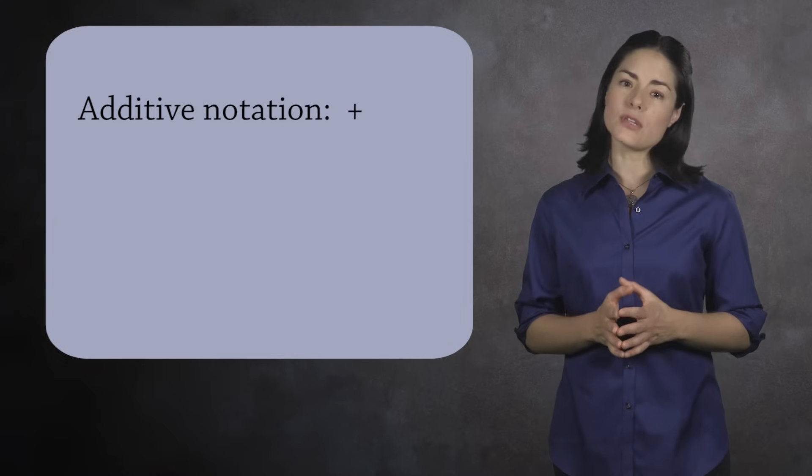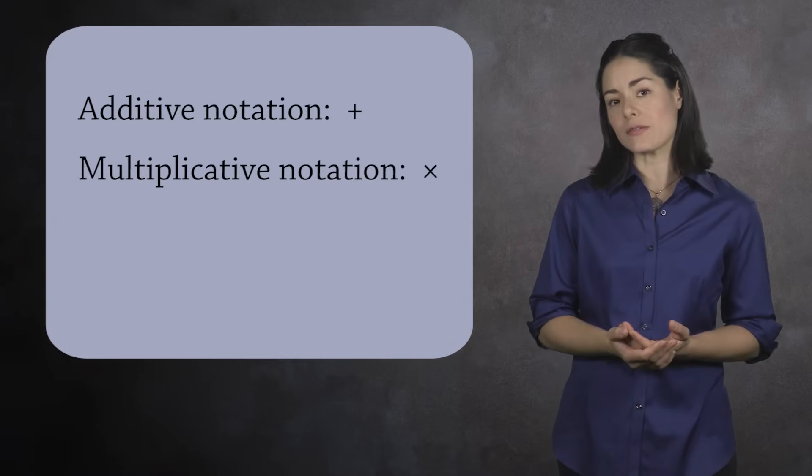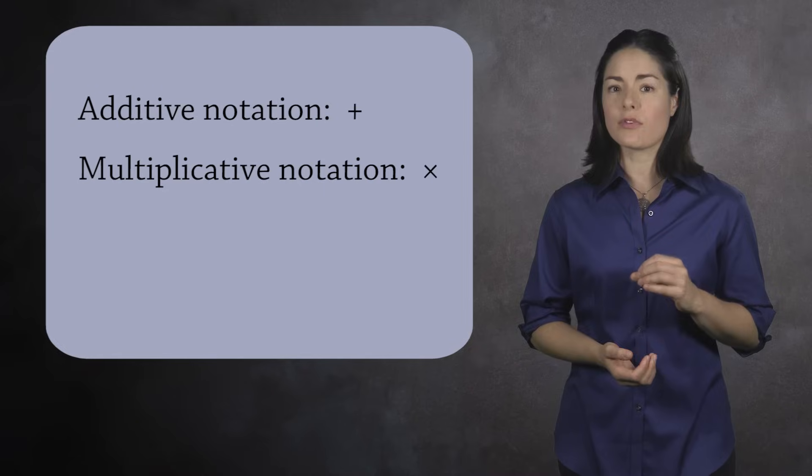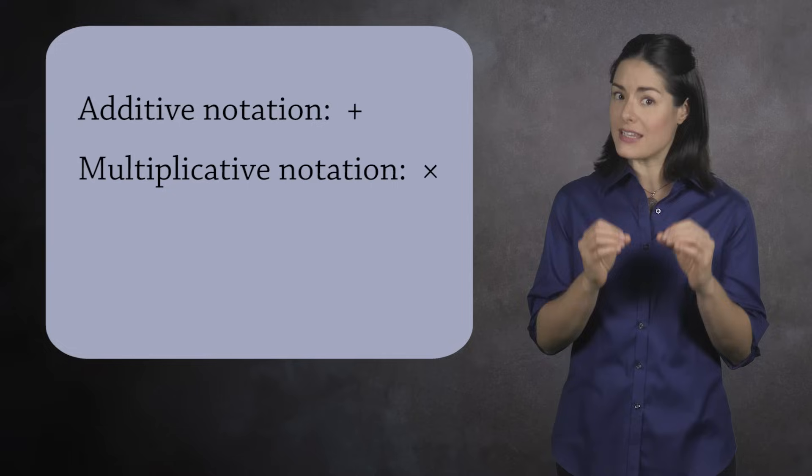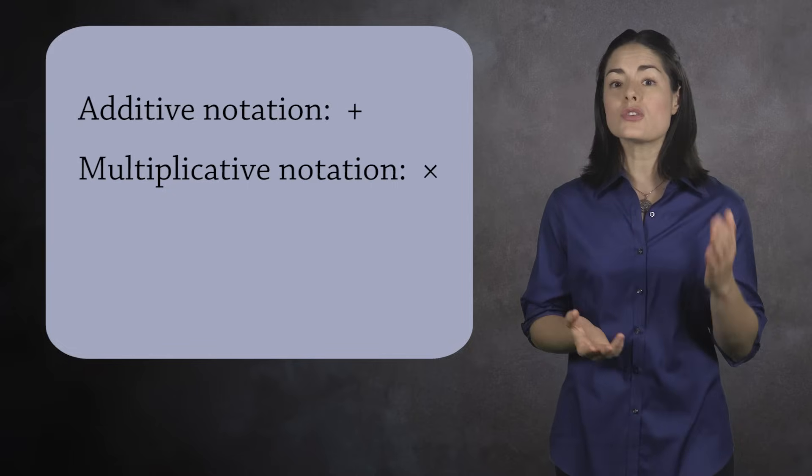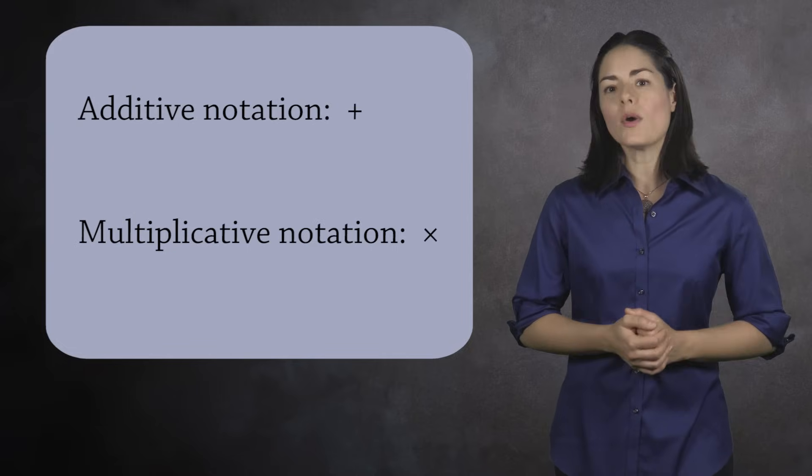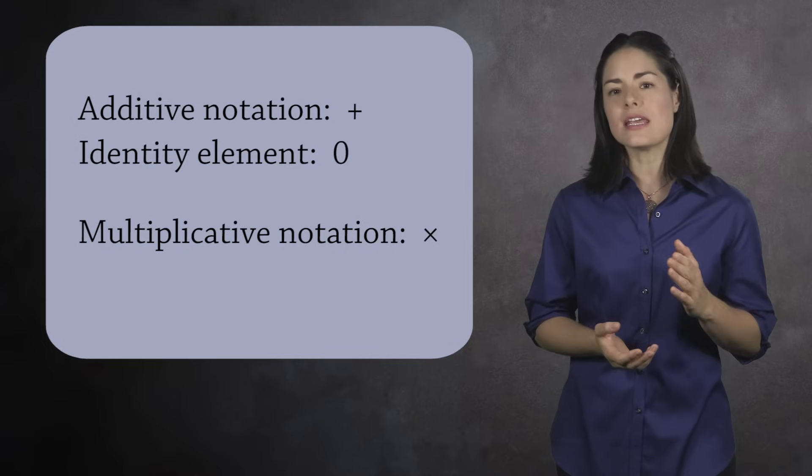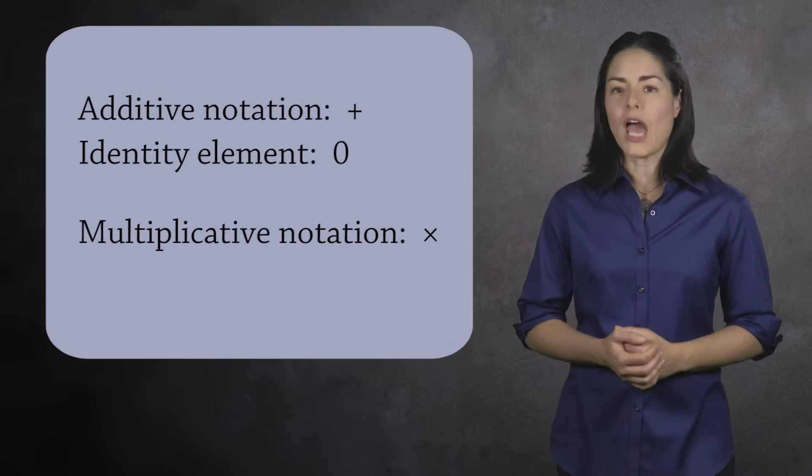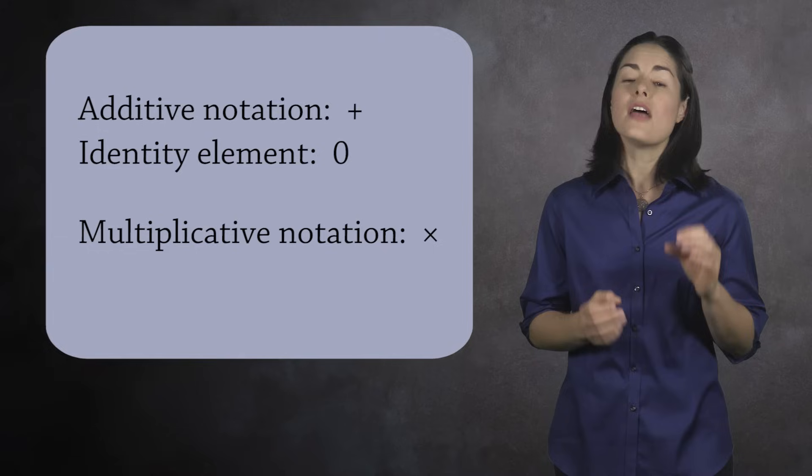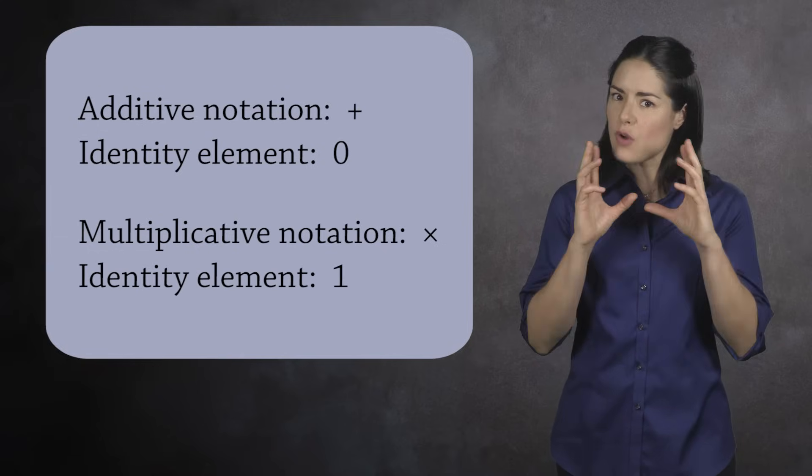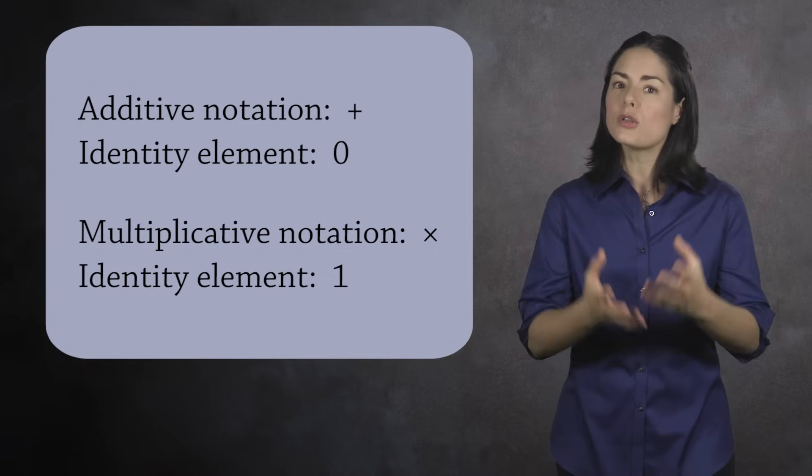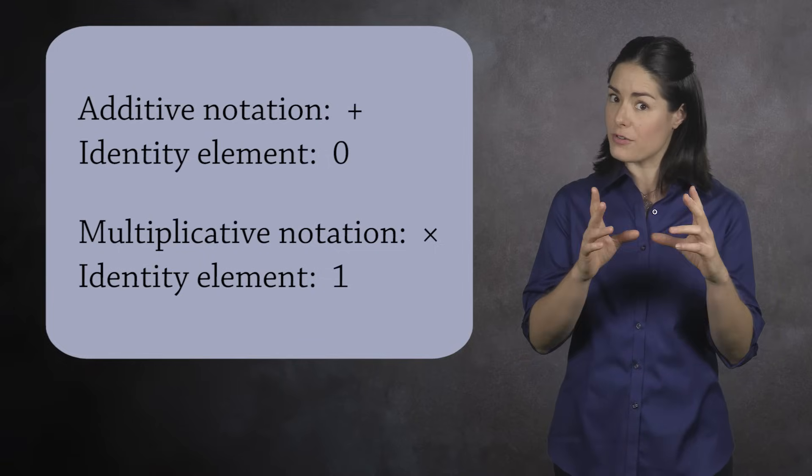When working with groups, you typically use additive notation or multiplicative notation. This is done even if the elements of the group are not numbers and the group operation is not numerical, but is instead something like geometric transformations or function composition. When using additive notation, the identity element is denoted by zero, and when using multiplicative notation, the identity element is denoted by one. But keep thinking abstractly, even if the notation tries to lure your mind into the familiar realm of the real numbers.